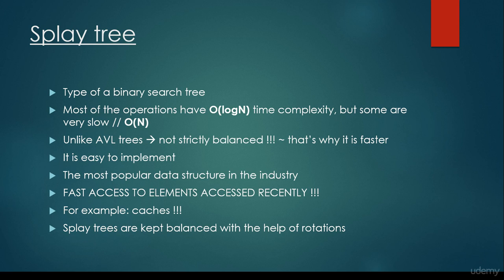Most of the operations have O(log n), so logarithmic time complexity, but some operations are very slow. Unlike AVL trees, it is not a strictly balanced data structure. Splay trees are not as balanced as AVL trees, but that's why it's going to be faster, because it takes a lot of time for AVL trees to make the tree as balanced as possible on every insertion. Here we are not going to make it strictly balanced, so we don't have to bother about making it perfectly balanced, and that's why it's going to be faster. It is quite easy to implement, and basically this is the most popular data structure in the industry.